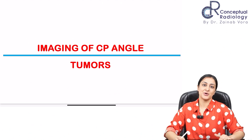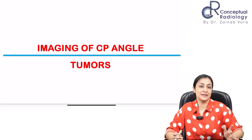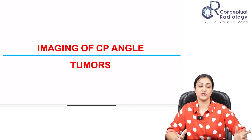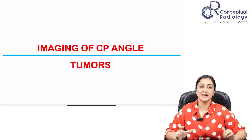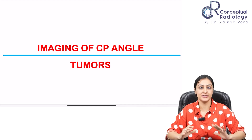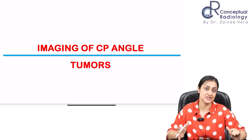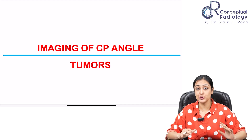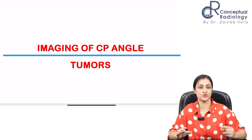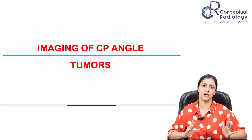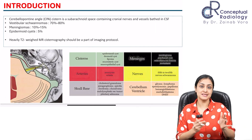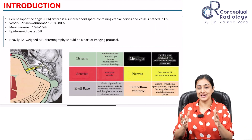We're going to be talking about imaging of CP angle tumors. This is an important topic — you do get theory questions from this, and it's an important area as far as neuroimaging is concerned. We'll be looking at a lot of cases and an overall approach. Short topic but pretty high yield.